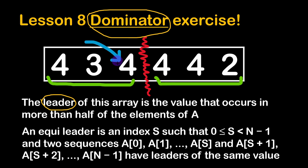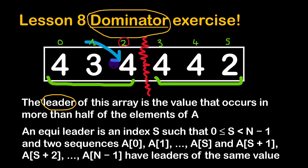Since both sides have the same dominator, this position is called an equileader. We are talking about the index more precisely — the index that splits the array in such a way. So index number two is the first equileader found in this example, because we are splitting the array into two parts that both have the same leader, which is number four.